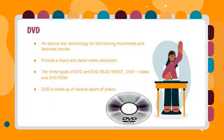The fourth storage device is DVD. A digital versatile disk is very similar to a CD. It is an optical disk technology for distributing multimedia and feature films. It provides a better quality picture. DVD is made up of several layers of plastic, each having many tracks of data. The three types of DVD are DVD-R, DVD-RW (read-writable), and DVD-ROM.